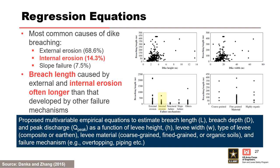Danka and Zhang 2015 created a database of over 1,000 levy failure cases and found about 14% of historical breaches were due to internal erosion. One of their conclusions was that the breach length for external and internal erosion was often longer than that developed by failure mechanisms of local nature, such as slope failure, horizontal sliding, or failure of embedded structures. They developed multivariate empirical equations for estimating breach length, breach depth, and peak discharge as a function of levy height, levy width, type of levy, levy material, and failure mechanism, which included piping. Although more control variables were used, neither set of regression equations presented considers flood duration.